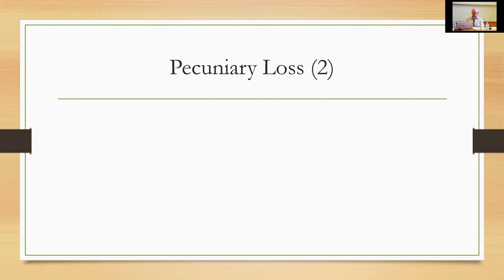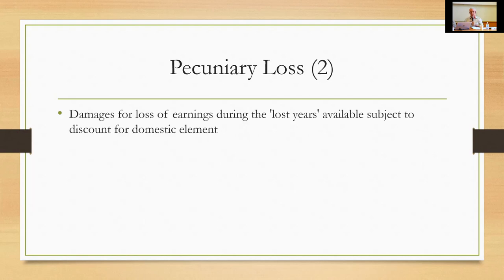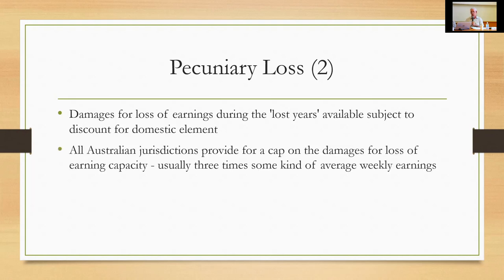Damages for loss of earning capacity are also available during the 'lost years' — years the plaintiff would have earned but will not, because their life has been shortened as a consequence of the tort. They can claim for loss of earning capacity during those years, subject to a deduction for the amount they would have spent keeping themselves alive in that period. Since 2003–2004, varying by jurisdiction, all Australian jurisdictions now provide a cap on awards for loss of earning capacity — usually three times some measure of average weekly earnings. That is a generous cap that captures very few people, but it differs from England where there is no such cap.